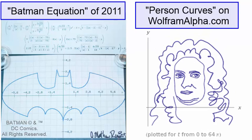Similar to my process, these curves are defined parametrically. However, the underlying mathematics of the person curves is quite different from what I do. I love both the 2011 Batman equation and these person curves. They, along with my process, all have their really cool features as well as their deficiencies.